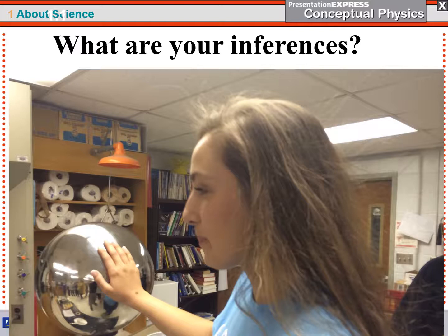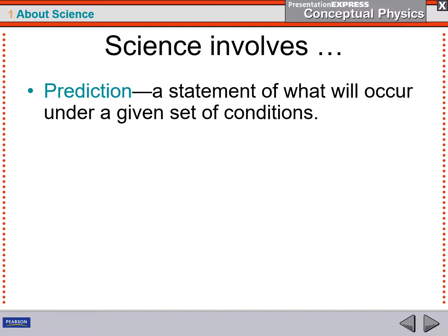So an observation is something that we can all agree upon, such as this thing is orange. Whereas an inference is, I think this is a laboratory at a school. We don't know that for sure, but it sure looks like one, doesn't it?